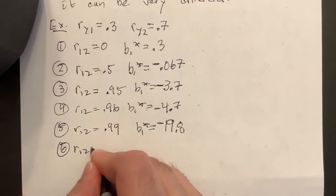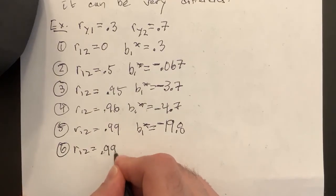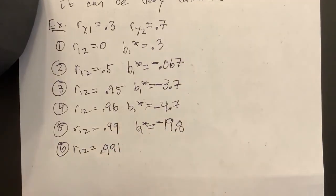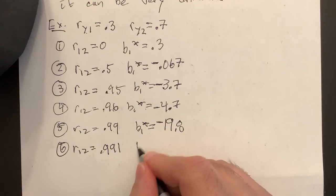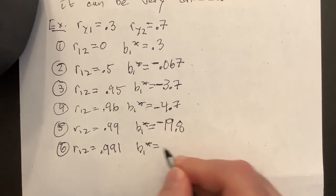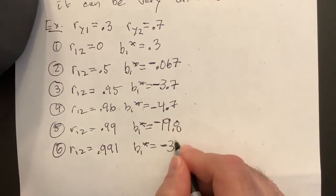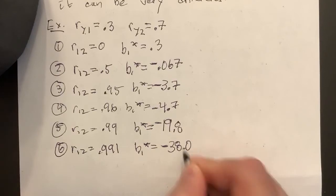Okay, if I had, let's say R12 equals 0.991, just a 10 to the minus third could be a little error from five to six, I get B1 star, it doubles practically, I get minus 38.